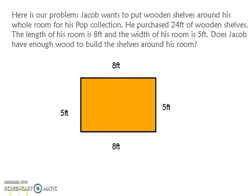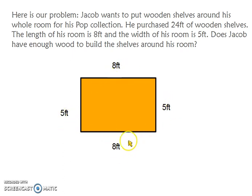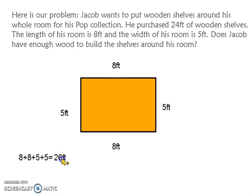When determining the perimeter, it is important that the student sees that all sides need to be added. And since there are four sides, four numbers need to be added. So let's add: 8 plus 8 plus 5 plus 5 is equal to 26 feet.